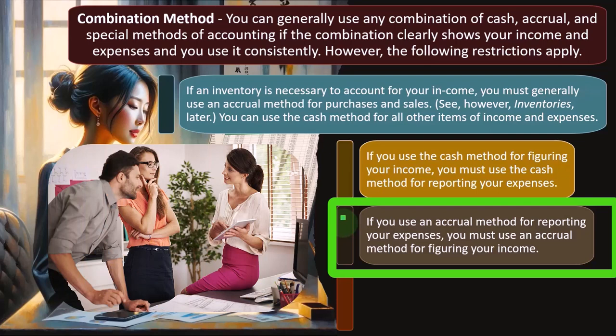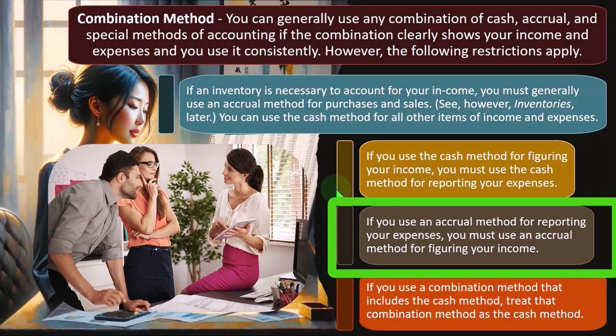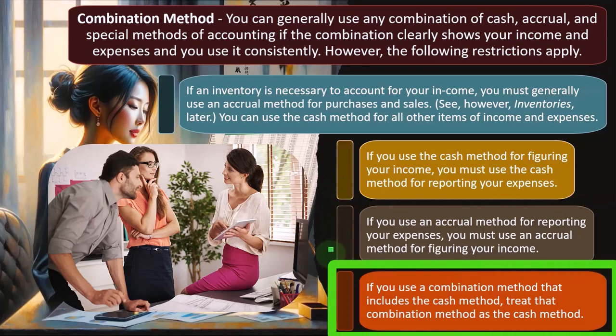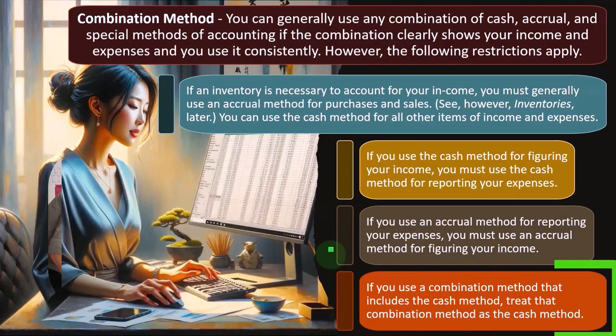Most small businesses are often in the situation of saying, I have to deviate from a cash-based system on the revenue side because of the industry I'm in, and then keeping a cash-based system — at least logistically on the expense side — because they're using their bank feeds to basically just electronically pay their expenses. So if you use a combination method that includes the cash method, treat the combination method as the cash method.